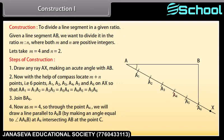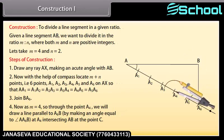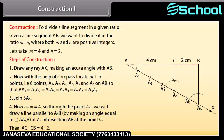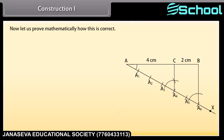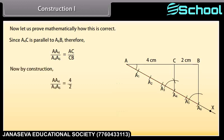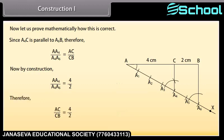Since M equals 4, through the point A4, draw a line parallel to A6B by making an angle equal to angle AA6B at A4, intersecting AB at the point C. Then AC to CB equals 4 is to 2. By the basic proportionality theorem, AA4 upon A4A6 equals AC upon CB. By construction, AA4 upon A4A6 equals 4 upon 2. Therefore AC upon CB equals 4 upon 2, showing that C divides AB in the ratio 4 is to 2.